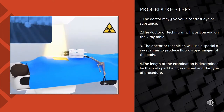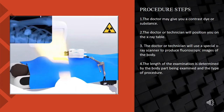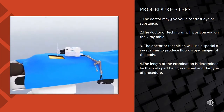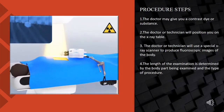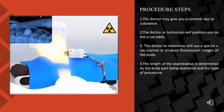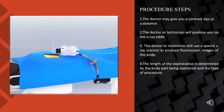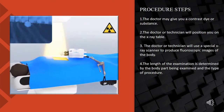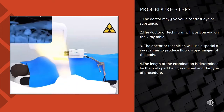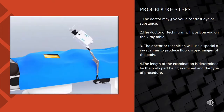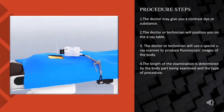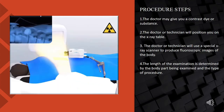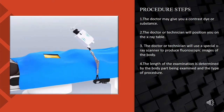Step 3: The doctor or technician will use a special x-ray scanner to produce fluoroscopic images of the body structure they are treating or examining. Step 4: The length of the examination is determined by the body part being examined and the type of procedure. Step 5: After completion of the procedure, the technician removes the IV line.